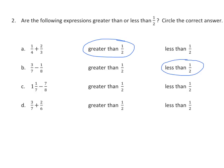For C, I have 1 and 1 seventh — that's really close to 1 — and 7 eighths, which is also close to 1. I have a minuend that's close to 1 and a subtrahend that's close to 1, so my answer is going to be less than 1 half.